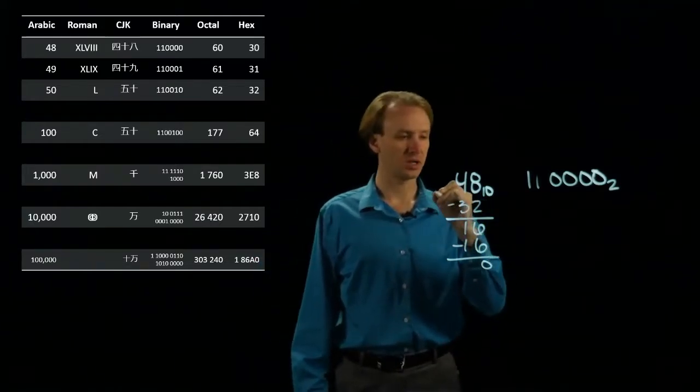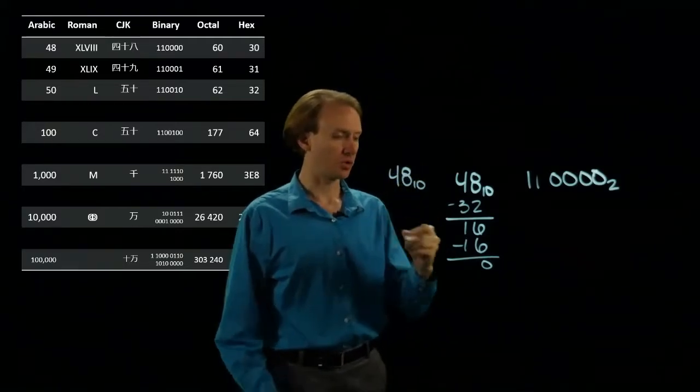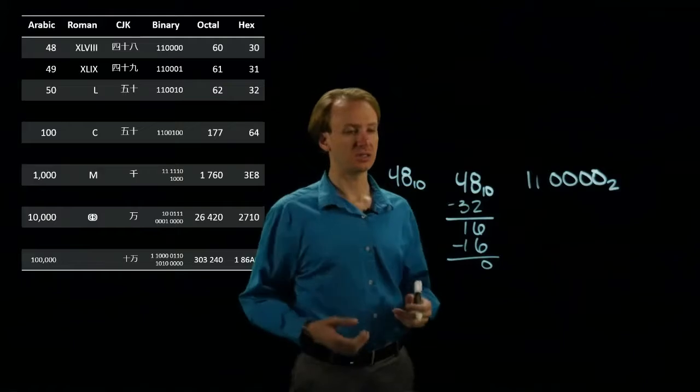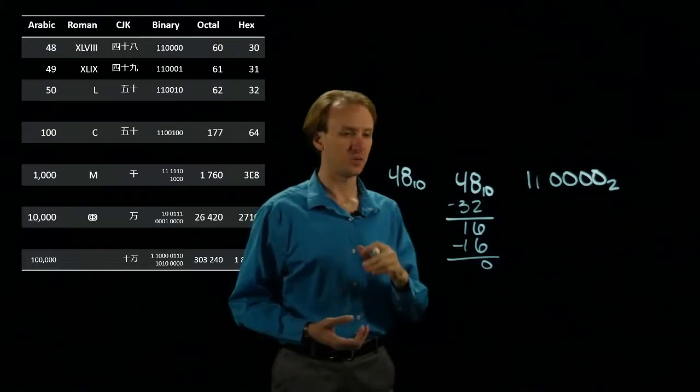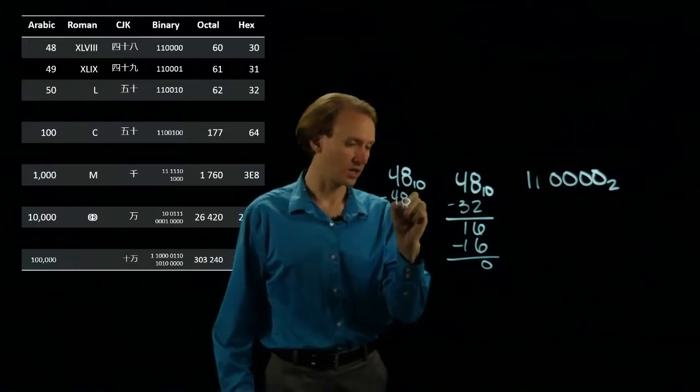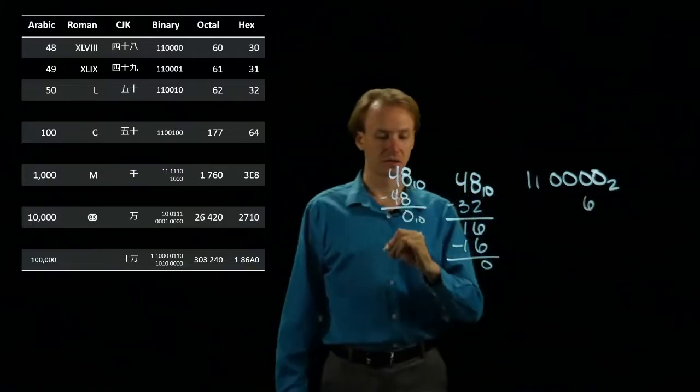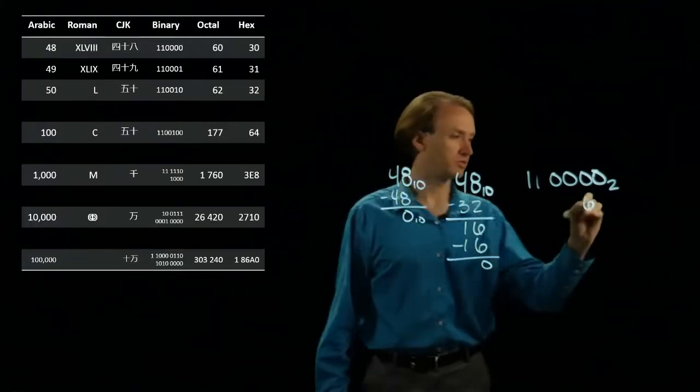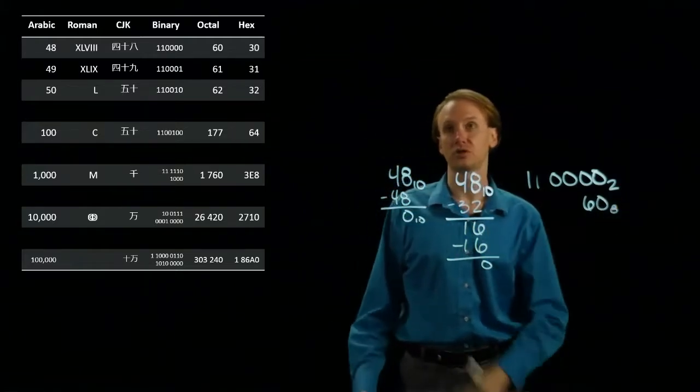So if I want to convert 48 from decimal to octal, well, I'm going to be looking for exponents of 8. So I have 1, 8, 64. Again, 64 is bigger than 48, so I'm going to look for something times 8 which fits into 48. Well, I know 6 times 8 is 48. So I will subtract 48 and write down 6 in my 8's position. Now I don't need anything else. I'm left with zero there, so I'll just put a zero in the ones position. And I get 60 in octal, which is also what I see for 48.